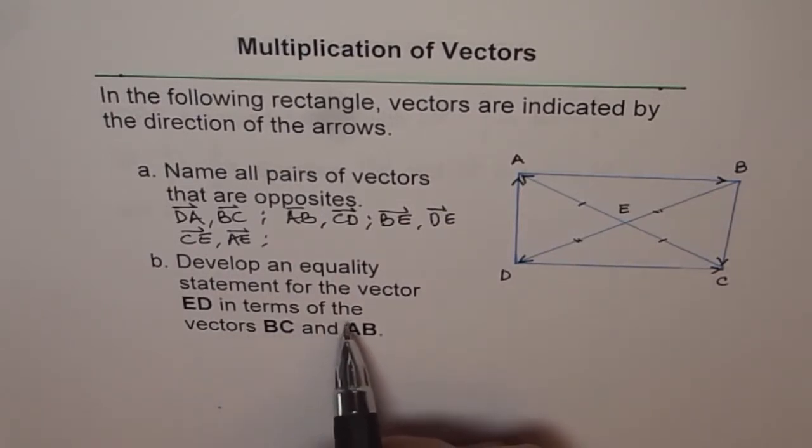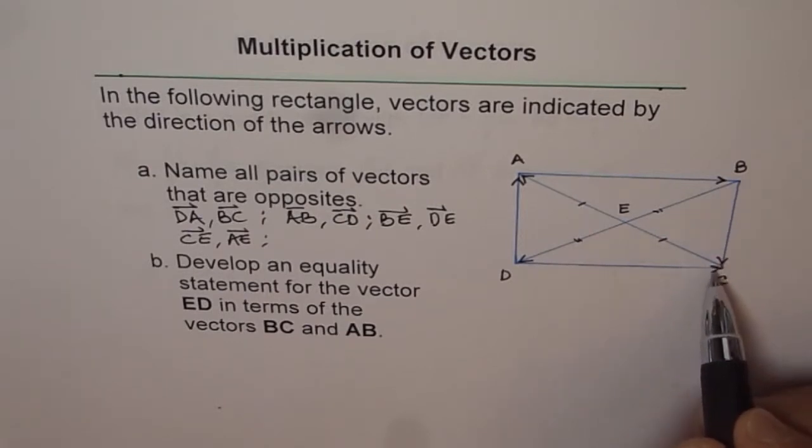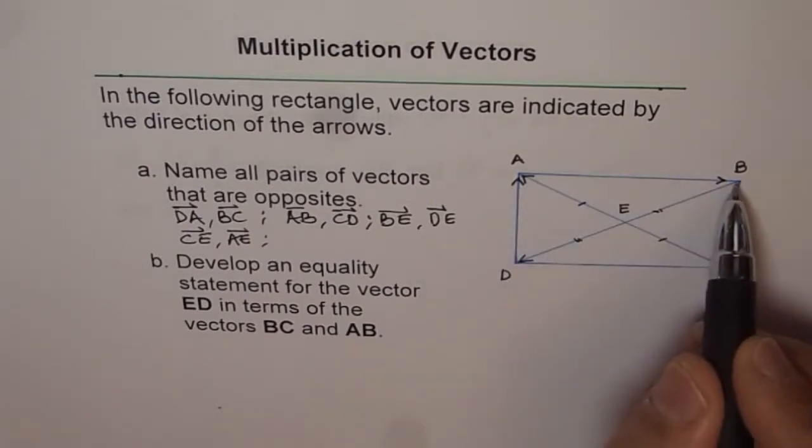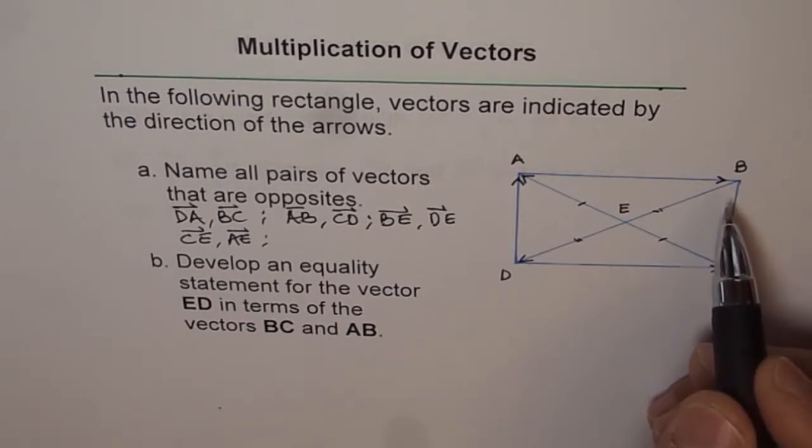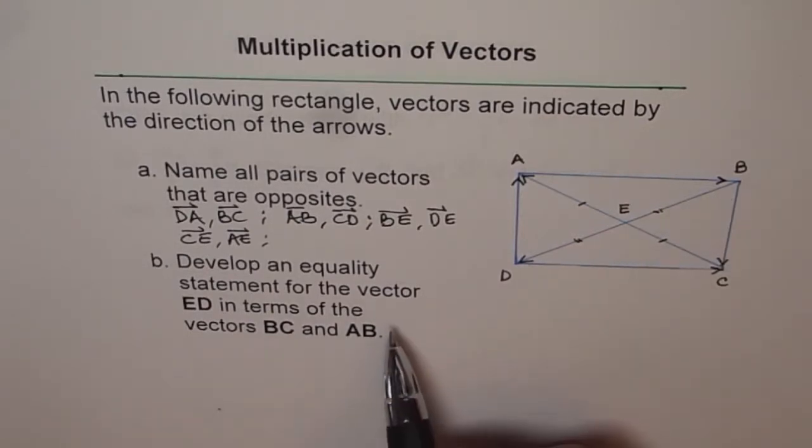We need to write in terms of BC and AB, correct? So, that is what we have to develop. We have to develop equality statement for this vector.